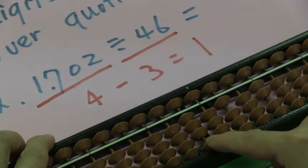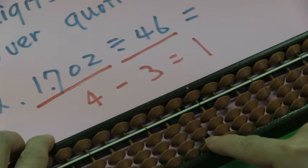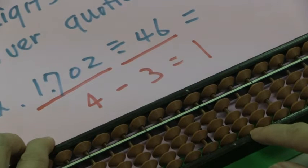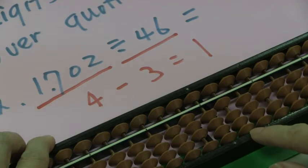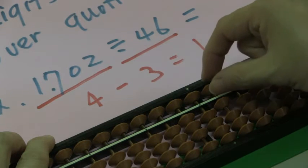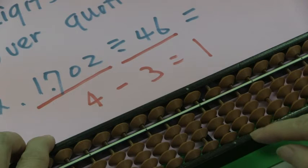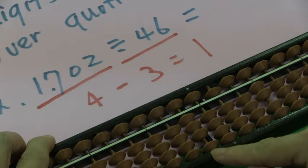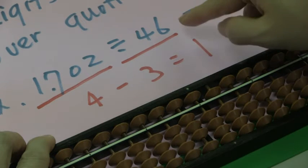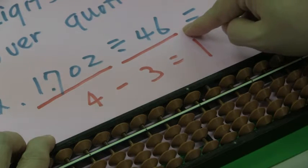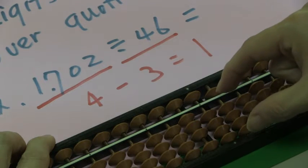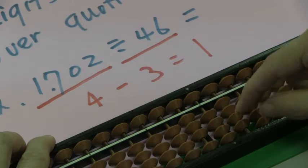We subtract quotient one time. Add it back to the remainder, which is 4. 1 plus 4 is 5. Next, we use quotient 3 times 6 is 18. 50 subtract 18 is 32.